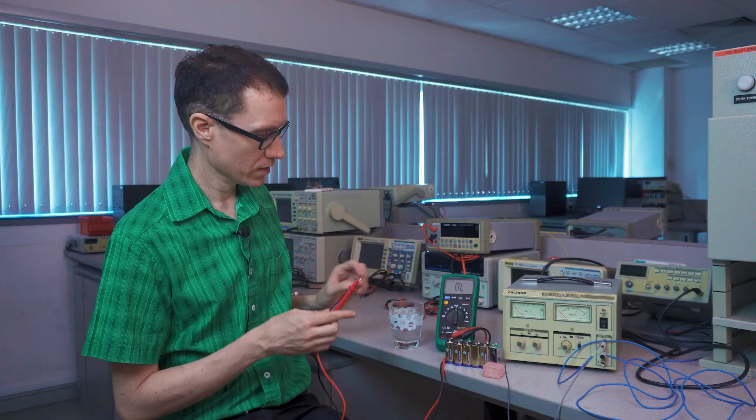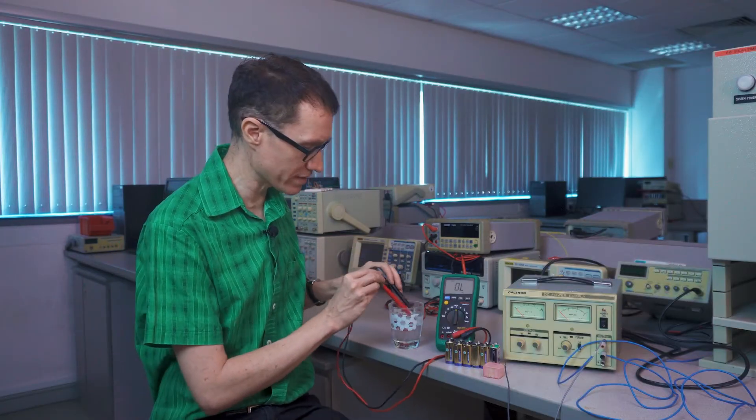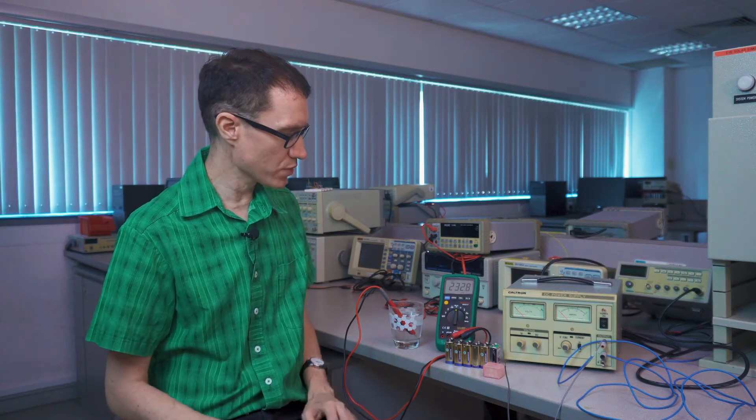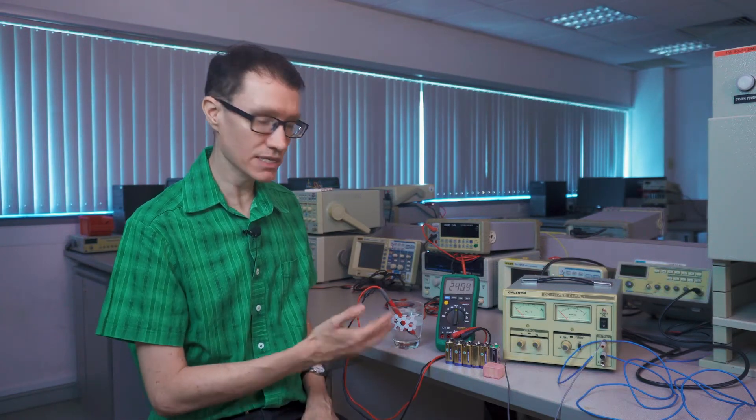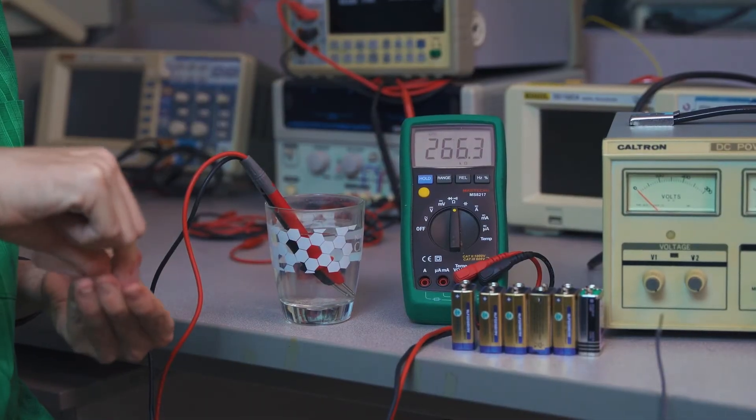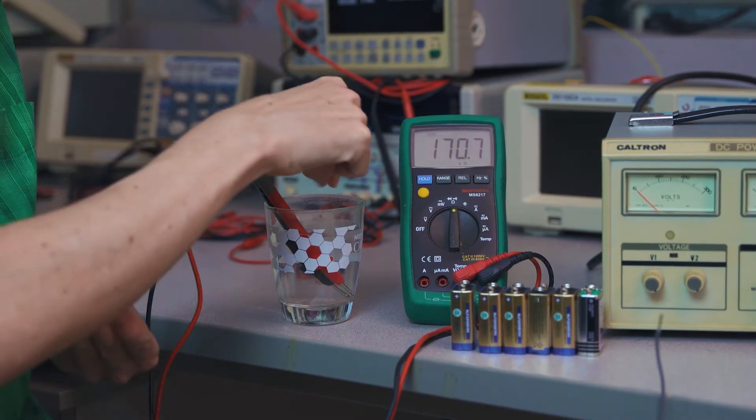That's something that we can estimate by measuring the resistance of salt water here in a glass. I'm going to measure the resistance of this glass of water. This is just ordinary tap water. The ohmmeter is telling us it's about 220 kilo-ohms, but this doesn't have any added salt. I've got some rock salt right here. Let's add the rock salt to the water and see what happens to the resistance.